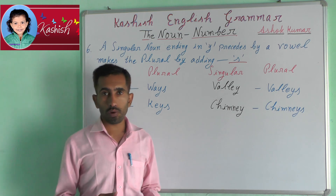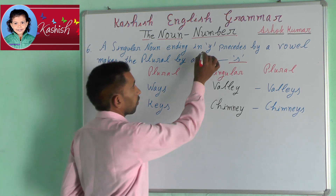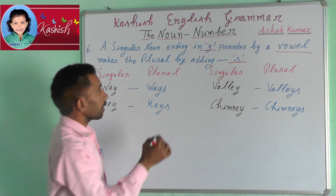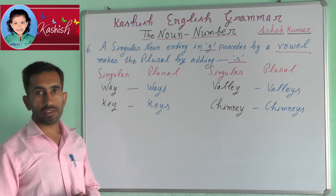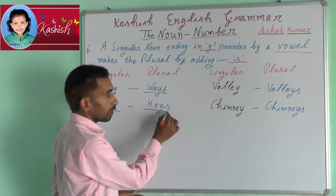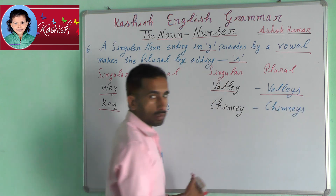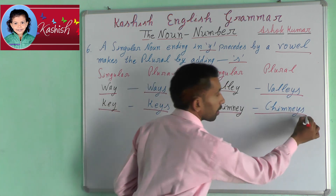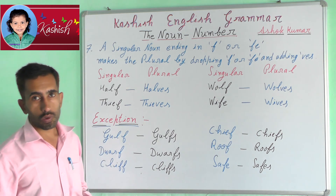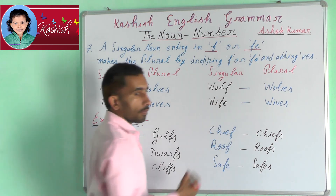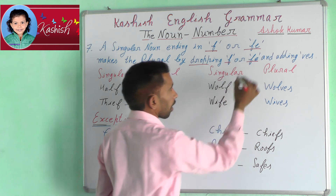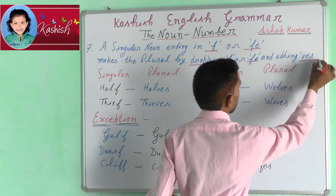Sixth rule: a singular noun ending in Y preceded by a vowel makes the plural by adding S. Seventh rule: a singular noun ending in F or FE makes the plural by dropping F or FE and adding VES.